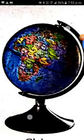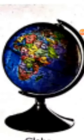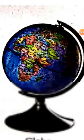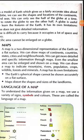It is a globe — the exact shape of the earth. Now we are going to study about maps. A map is a two-dimensional representation of the earth on a flat surface. We can draw maps of continents, countries, states, cities and neighbourhoods.